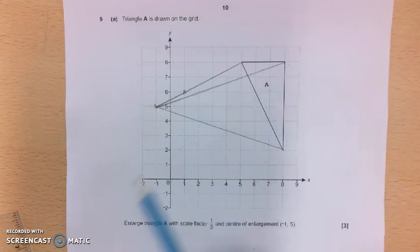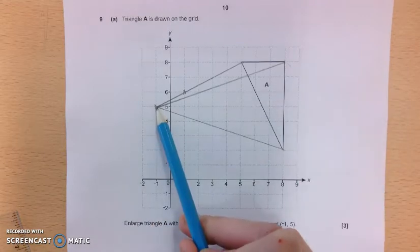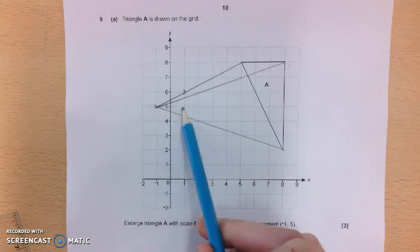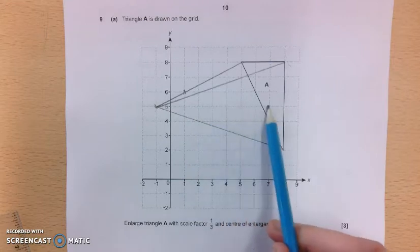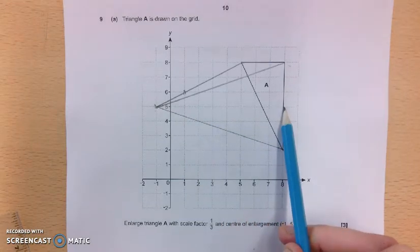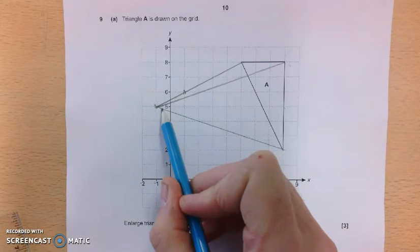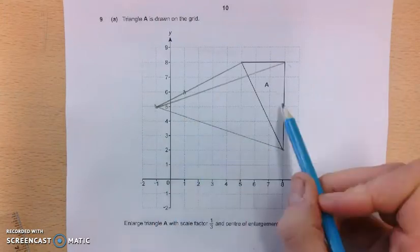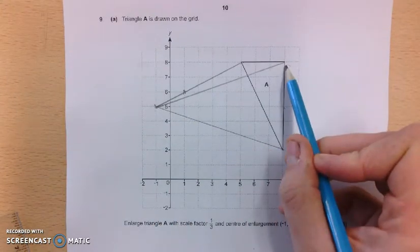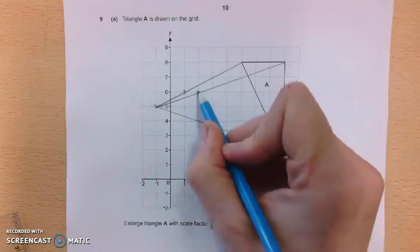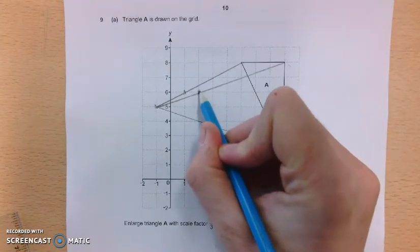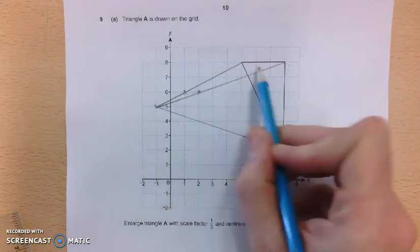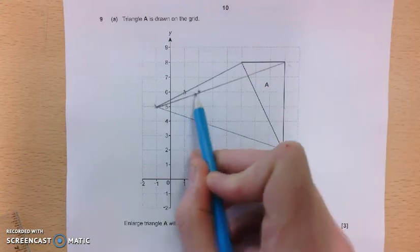Now I'll repeat that for this line. So again, 1, 2, 3, 4, 5, 6, 7, 8, 9. So 1 third of that is 3. It gets me to here. And then 3 squares up. 1 third of that is 1. And you can see, quite nicely, I'm on the ray line also. I'm horizontal with this other point. So that looks pretty helpful.